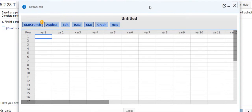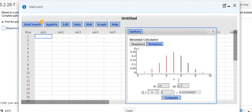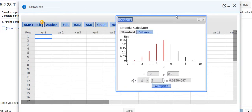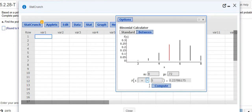In StatCrunch, I want to click on Stat and then Calculators, and then the drop down menu, I want to go to Binomial. And this is great. You can do these really quickly. In our problem, we were told we were going to select eight people. And the probability of success, success being that they believe in spanking children, is 0.72.